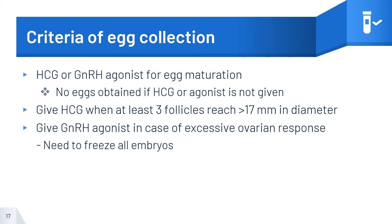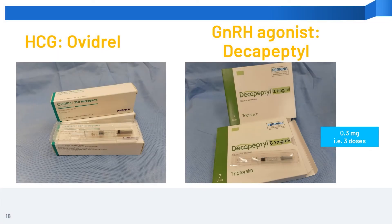Criteria for egg collection. HCG or gonadotrophin-releasing hormone agonist injections are required for egg maturation. If these injections are not given, the eggs cannot be obtained. Agonist trigger is used in cases of excessive ovarian response, but in these situations the embryos need to be frozen and fresh transfer will not be performed. These are photos of the commonly used injections — HCG and GnRH agonist — used for egg maturation.